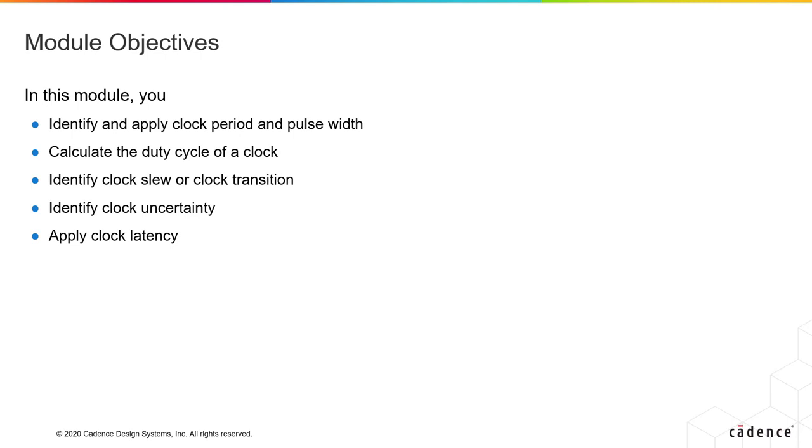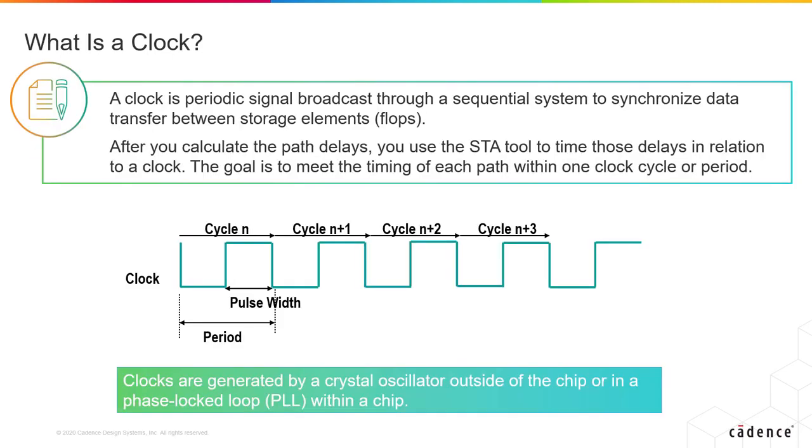We'll also look at how the clock is propagated in a design. Clocks are periodic signals that are broadcast and are generated either on the chip or outside of the chip. A crystal oscillator can be used to generate clocks outside of a chip, and to generate it within the chip, you use phase locked loops or PLLs. In digital circuits, clocks play a vital role because they trigger the storage of memory devices and control state machines.